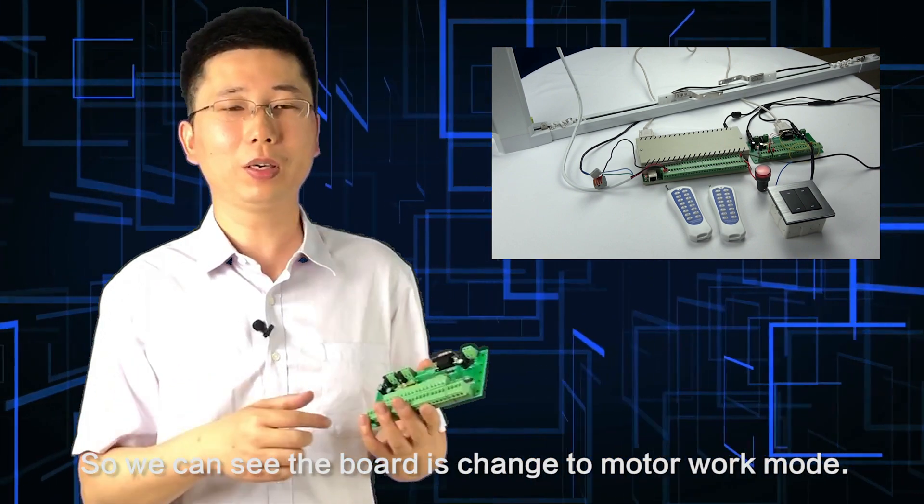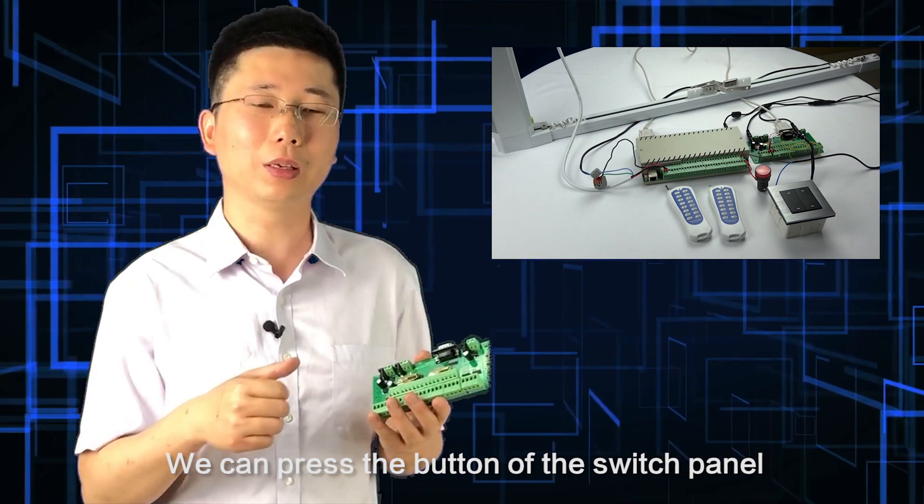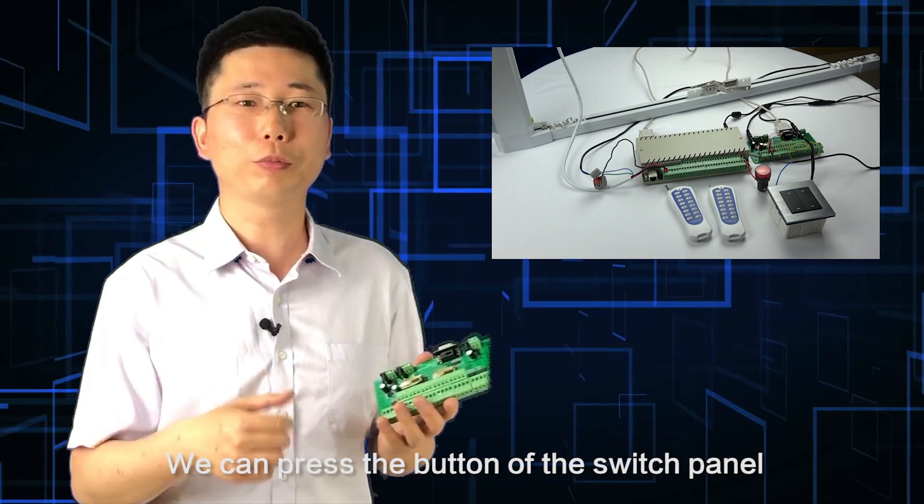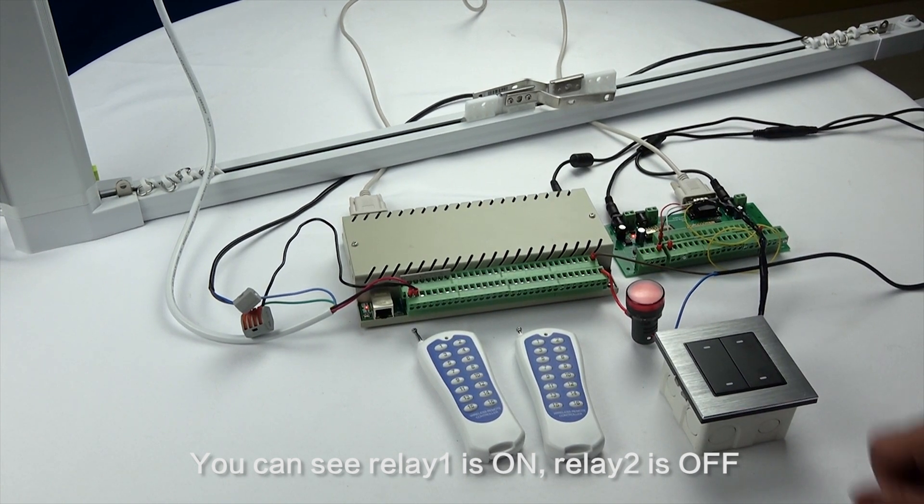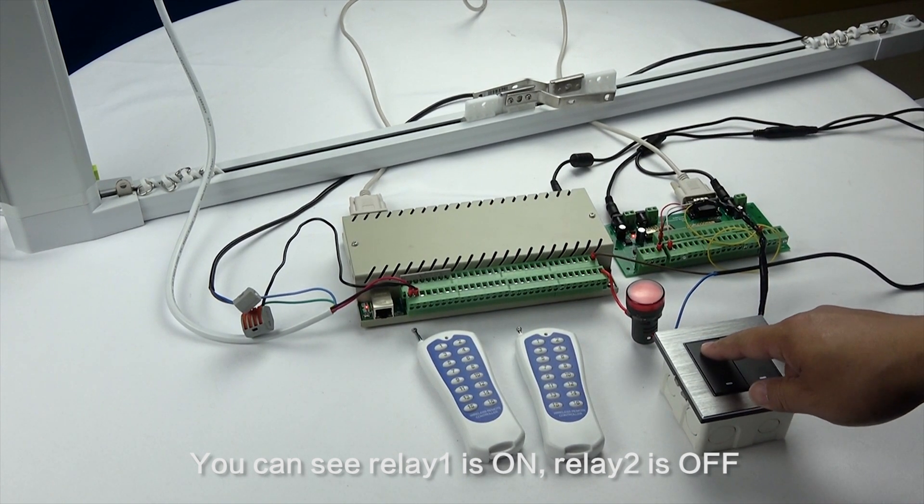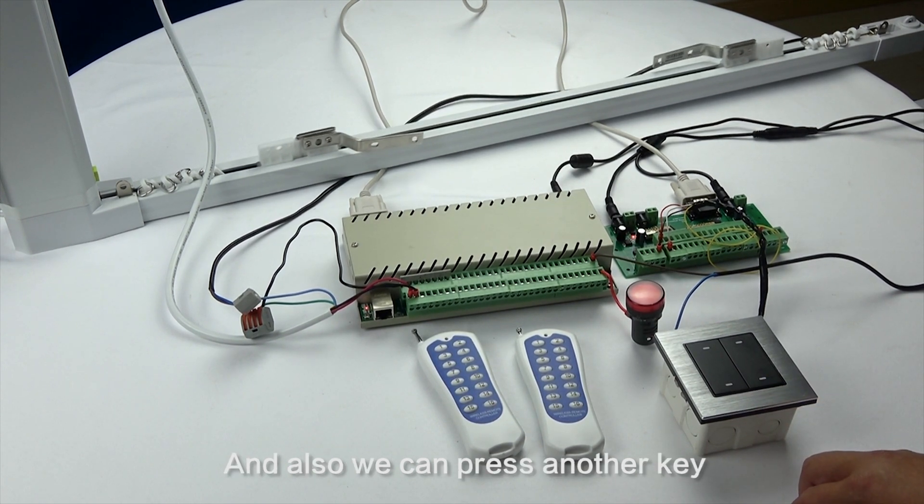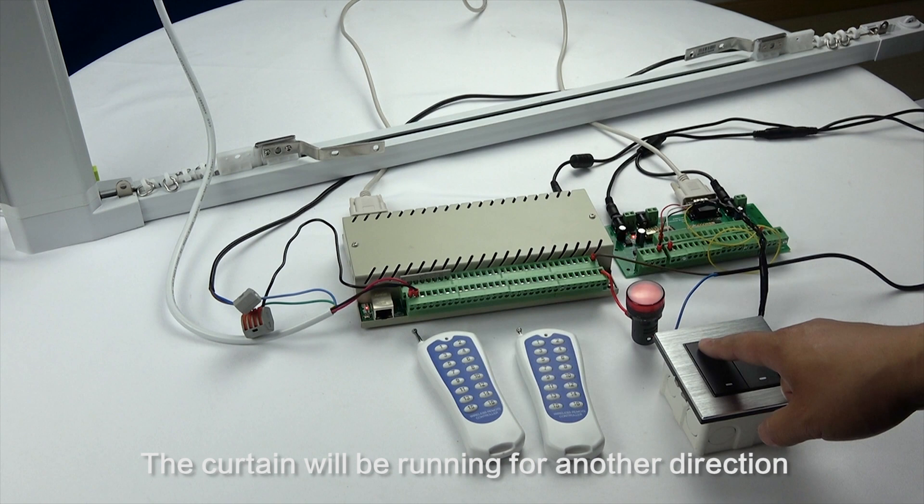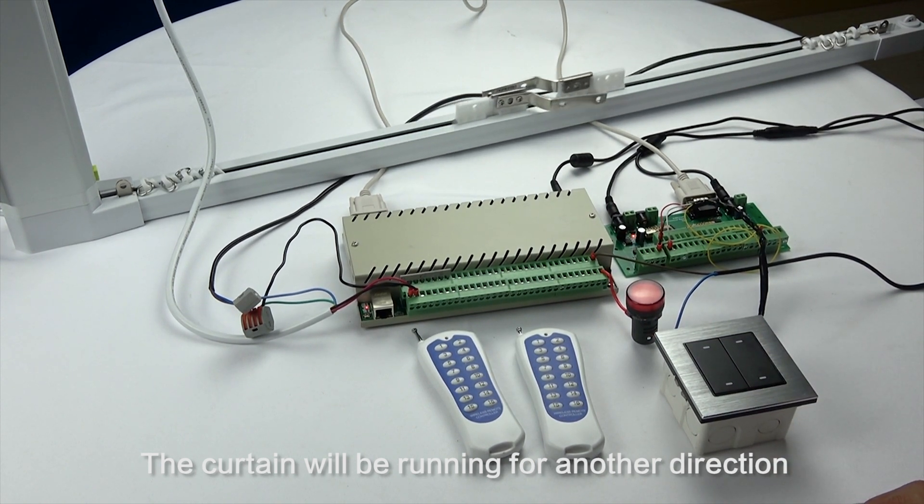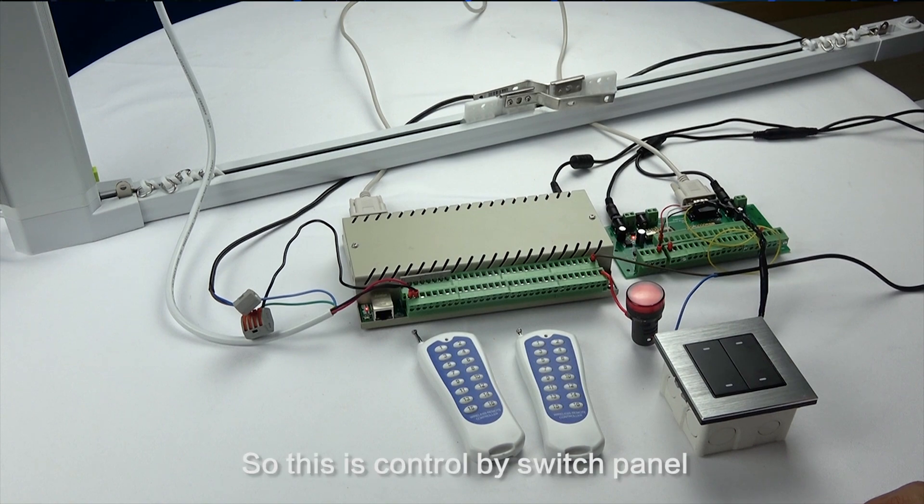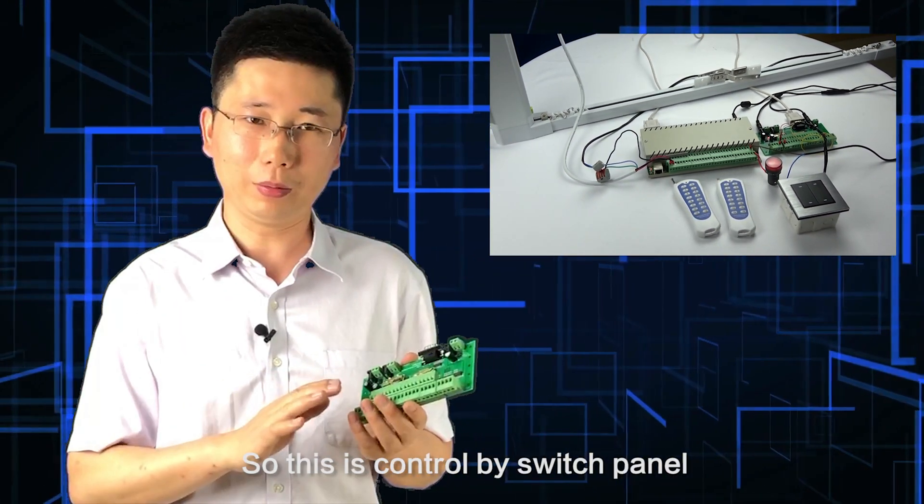Now we can see the board has changed to motor work mode. We can press the button on the switch panel. You can see Relay 1 is on and Relay 2 is off, so the curtain will be moving. We can press another key and the curtain will run in the other direction. This is how to control it using the switch panel.